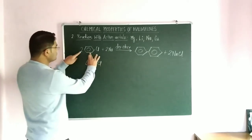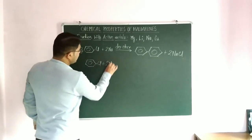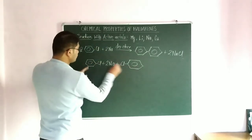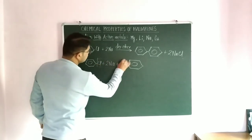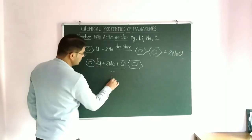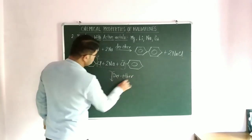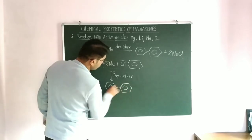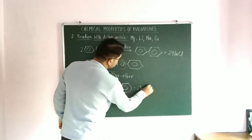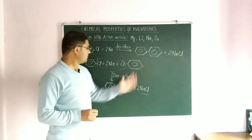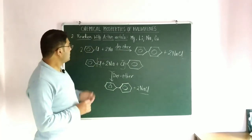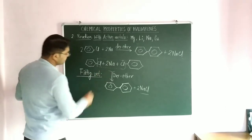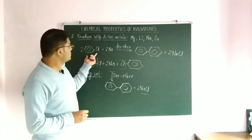Two moles of chlorobenzene when treated with sodium metal in the presence of dry ether form biphenyl (diphenyl), represented as C6H5–C6H5, with the elimination of 2 NaCl. This is a specific method for the preparation of biphenyl, and the name of this reaction is the Fittig reaction.